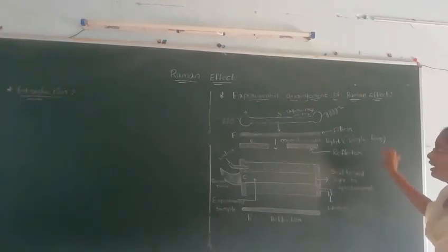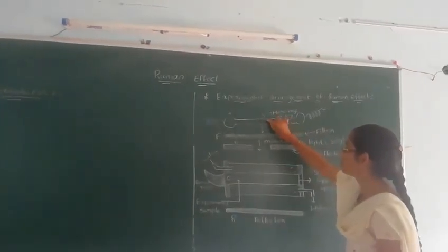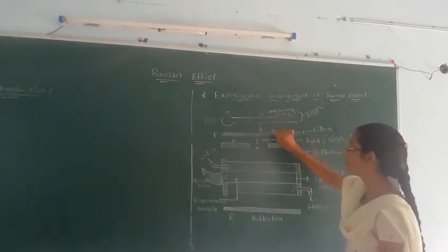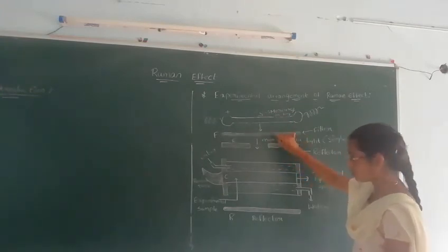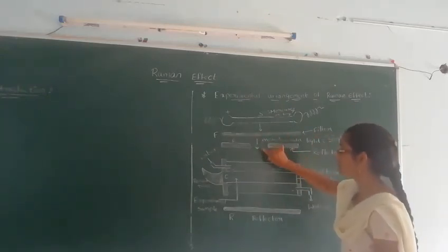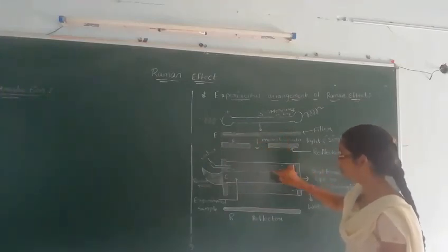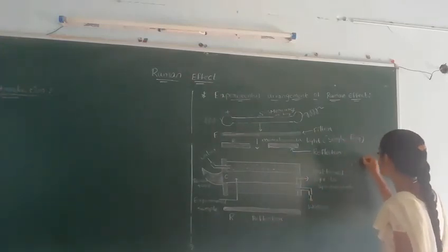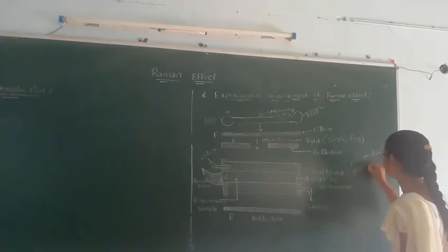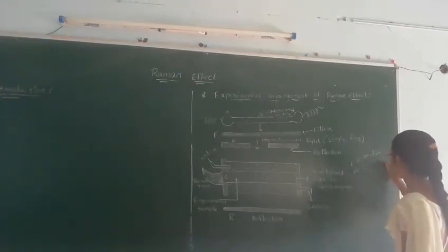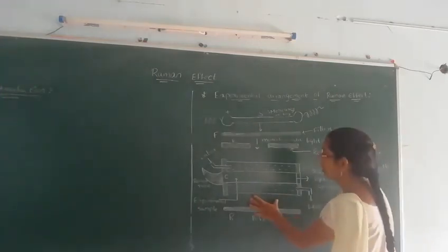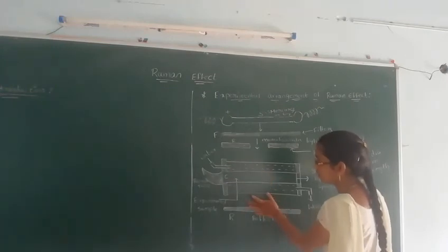The experimental arrangement of Raman effect uses a mercury arc lamp as source, which passes through a filter for monochromatic light, then through a reflector, and falls on the Raman tube. The Raman tube is a glass tube consisting of 1 to 2 centimeters diameter and 10 to 15 centimeters in length, and it is surrounded by water.